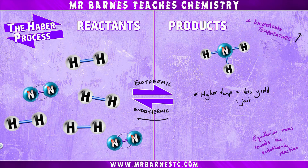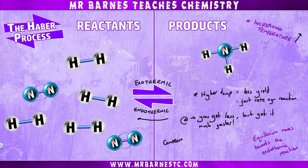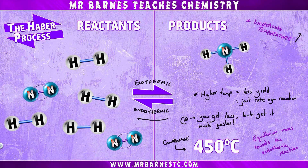We do however have a fast rate of reaction at higher temperatures, so we get a small amount of product but we get it quickly. We have to compromise, and we go for 450°C, which is a compromise between the speed of getting it and the yield we actually get.